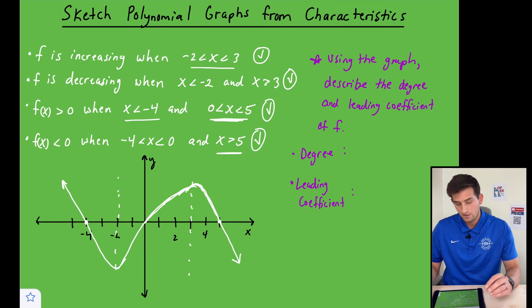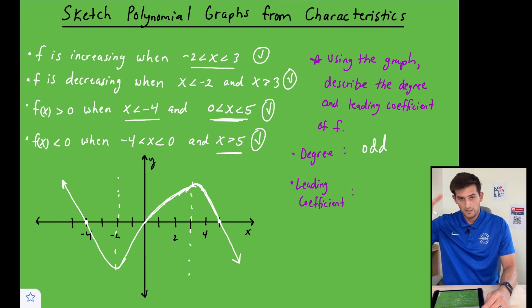And so now we can think about the previous video that we talked about end behavior that was in the cards a minute ago. And now we can see, okay, this is looking like an odd degree function, right? Because that's the one that looks kind of like a wave. The even degree is more like an M, right?